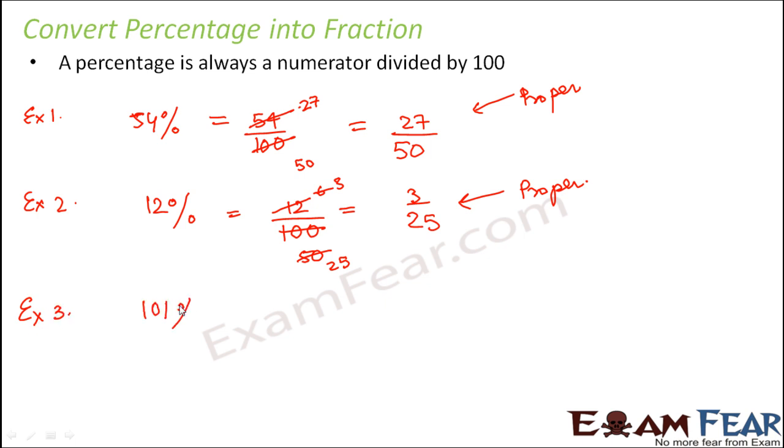Now let us look at some percentages which are greater than 100. Let us talk about 101 percent. What would be this value? This would be 101 by 100. And this is the simplest form. So 101 by 100 is an improper fraction.